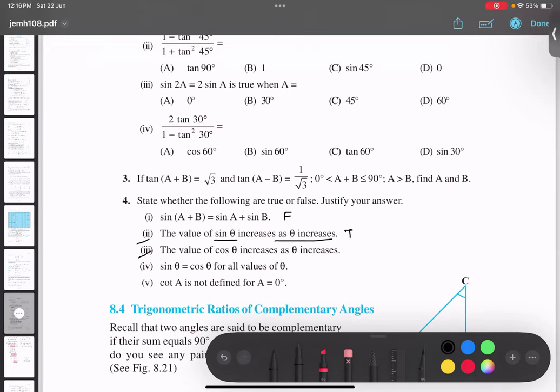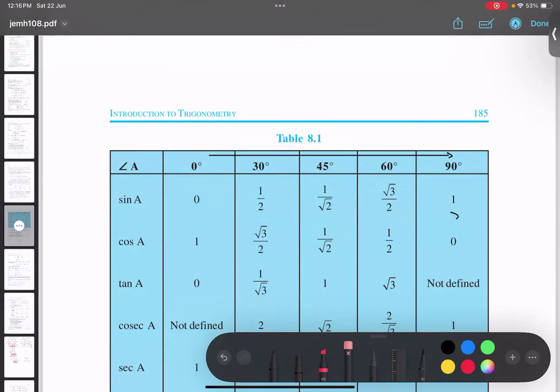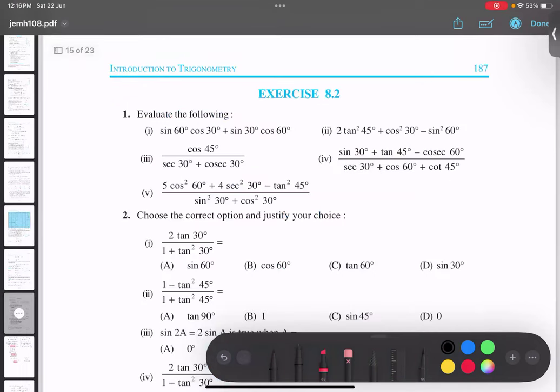Third part: the value of cos theta increases as theta increases. Tell me, is the value of cos theta increasing? No, no. From 0 to, from 1 to 0, so it is actually decreasing. So it is false.